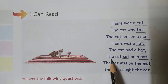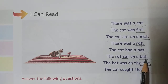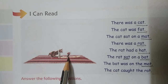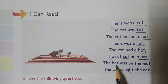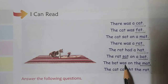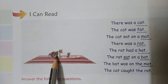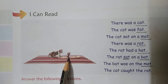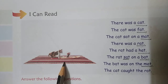This is a hat. T-H-E, the, R-A-T, rat. W-A-S, was, O-N, on, T-H-E, the, M-A-T, mat. The rat was on the mat. Where was the rat? The rat was on the mat. Where was the cat? The cat was on the mat.